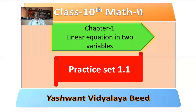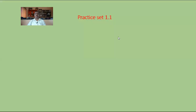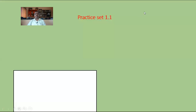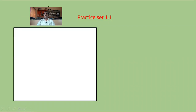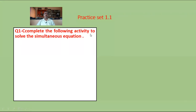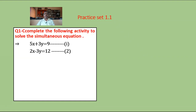Today we are going to learn the problems in Practice Set 1.1. The first problem in Practice Set 1.1 says: complete the following activity to solve the simultaneous equations. 5x plus 3y is equal to 9 — equation number 1; 2x minus 3y is equal to 12 — equation number 2.